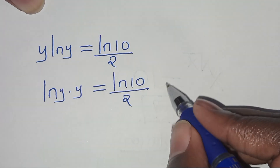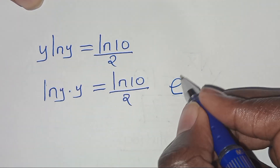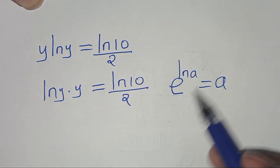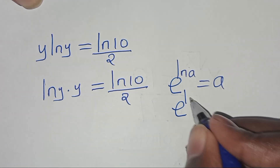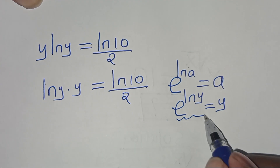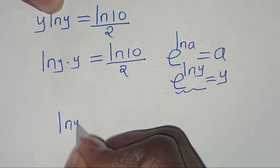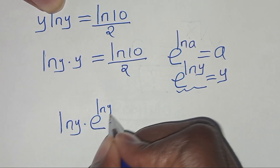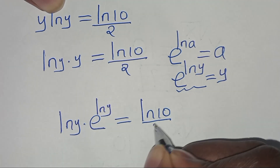The next step is to introduce the exponent property that states e^(ln a) = a. Applying this property, we have e^(ln y) is the same thing as y. Let's substitute this, so that we have ln(y)·e^(ln y) equals ln(10)/2.